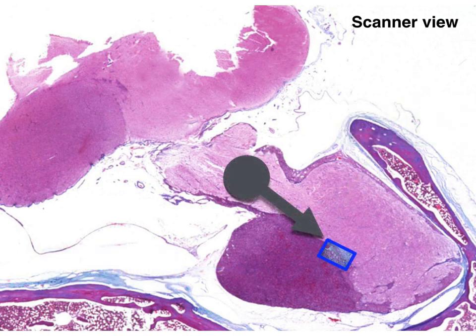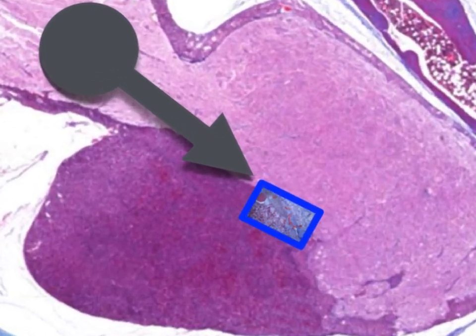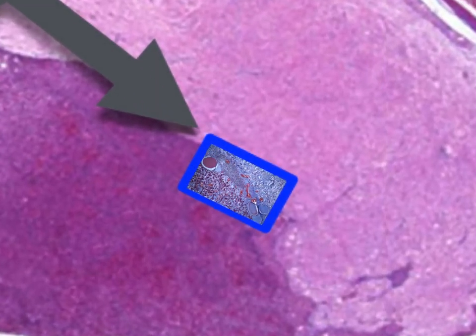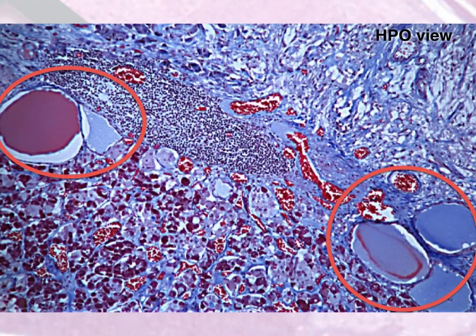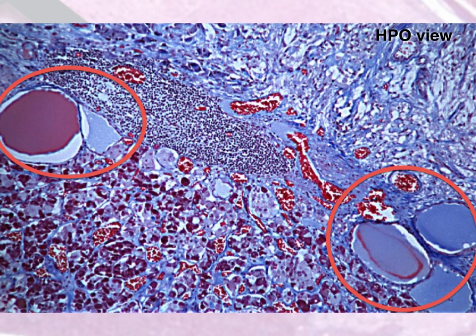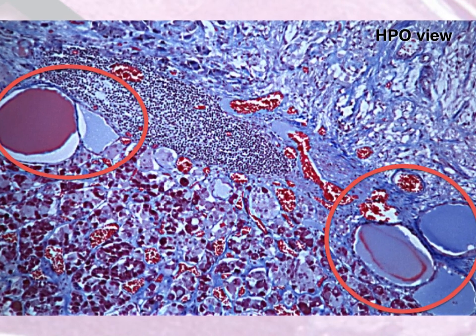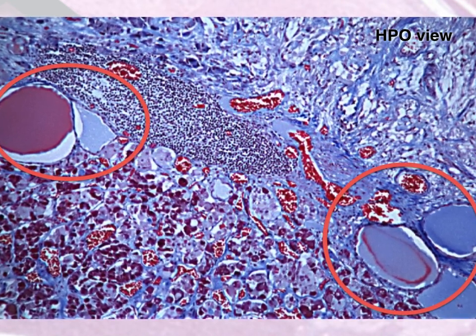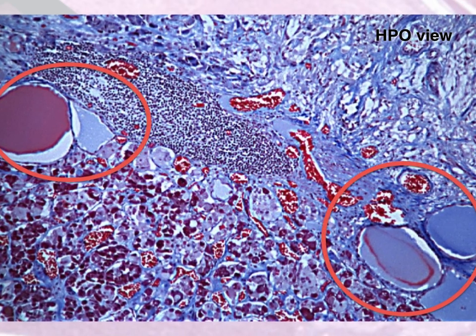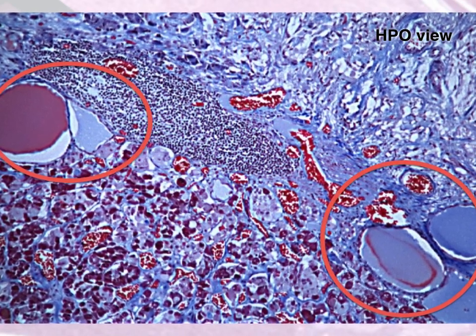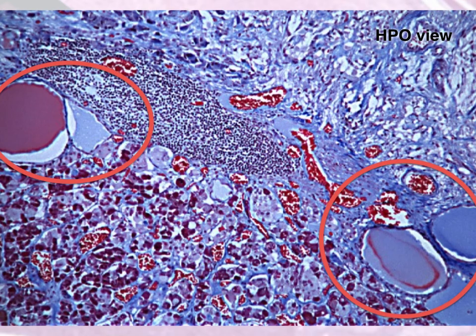Let us now focus on the portion of the anterior pituitary gland that is in intimate contact with the posterior pituitary. This is called the pars intermedia. At high magnification, we can see that this part of the anterior pituitary gland is characterized by the presence of colloidal structures. These colloidal structures are called Rathke's cysts. The pars intermedia secretes the melanocyte-stimulating hormone.